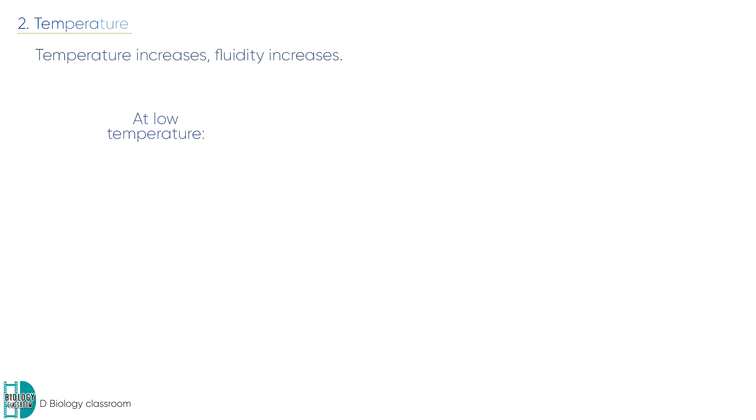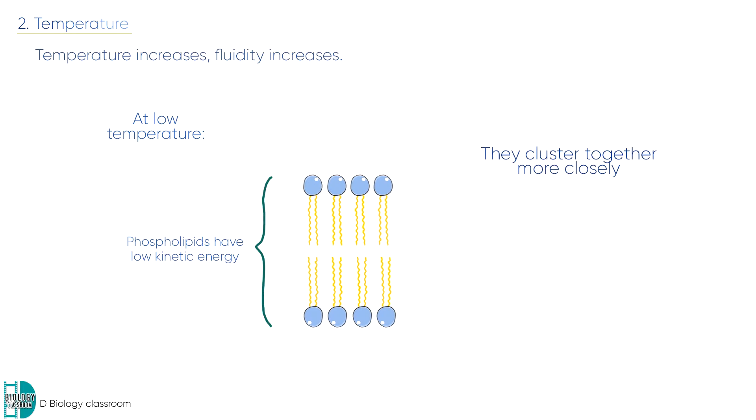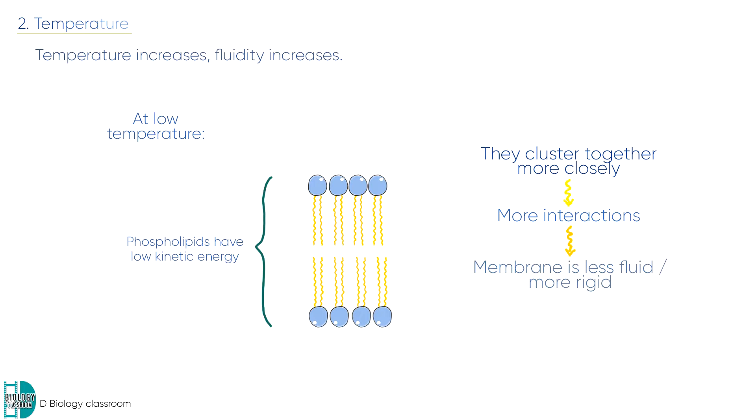At lower temperatures, phospholipids in the bilayer have less kinetic energy. They cluster together more closely and increase intermolecular interactions. This makes the membrane very rigid.